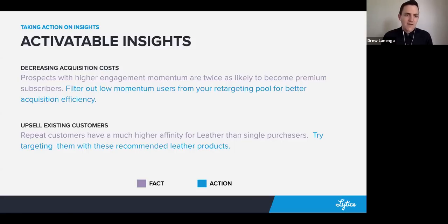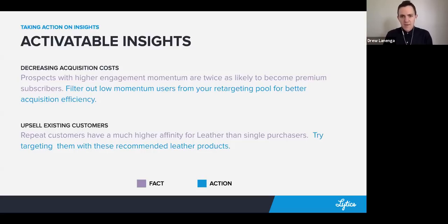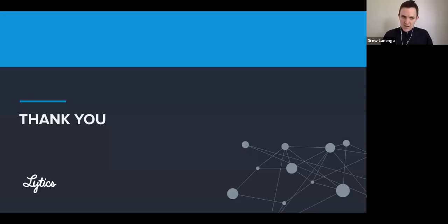Additionally, you might have a different use case around upselling existing customers. Here's a fact: repeat customers have a much higher affinity for leather than single purchasers. A logical next step could be: try targeting them with recommended leather products. If you're in your BI tool seeing a lot of activity around leather but can't execute based on that, then that's not really an activatable insight. What we're in search of is a machine learning machine that puts us in the driver's seat and allows us to execute on these activatable insights. In our subsequent sessions, we'll talk with actual marketers in actual use cases delivering on actual activatable insights.